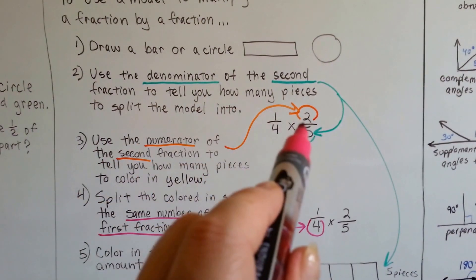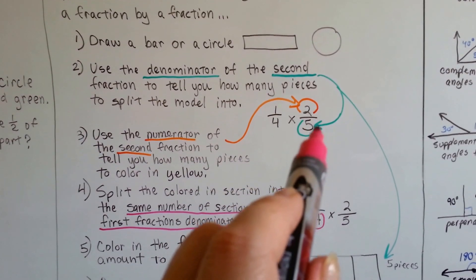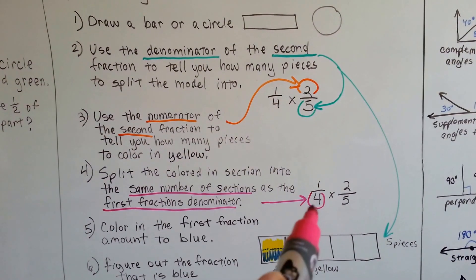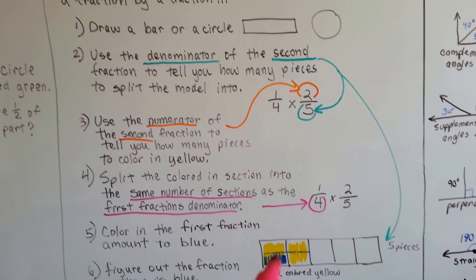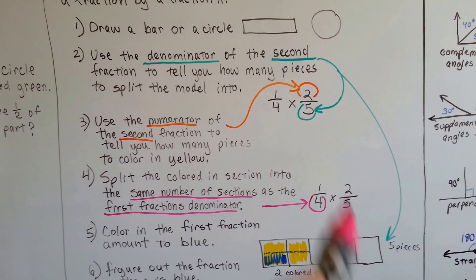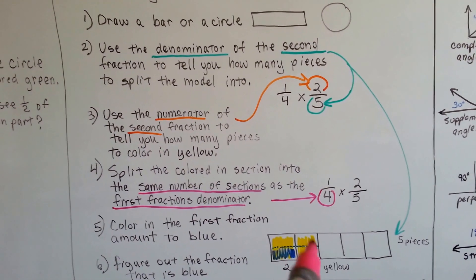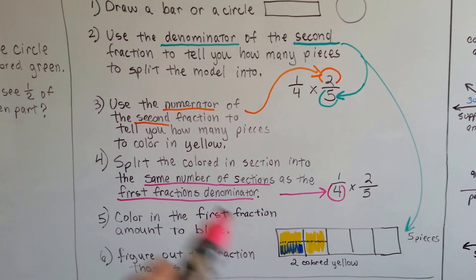We use the numerator of that second fraction to tell us how many to color in. Well, if we do 1 fourth times 2 fifths, the 2 is telling me, out of the 5 pieces that I split it into, to color 2 of them. So I colored 2 of them yellow.